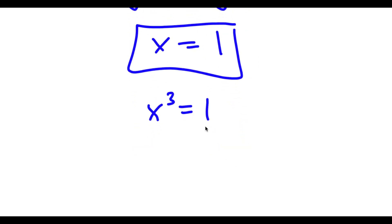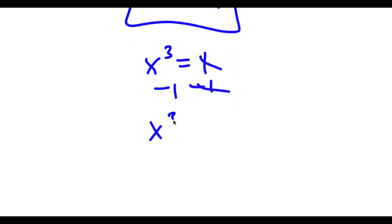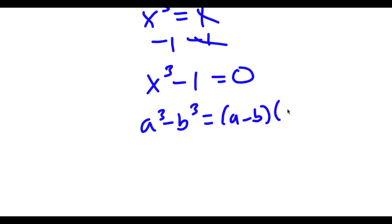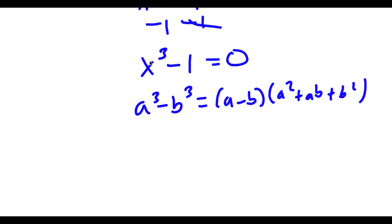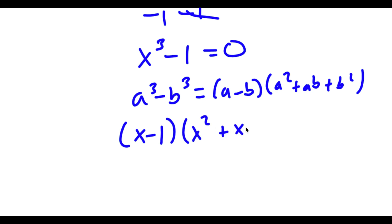Now I'm going to get more solutions. This time I'm actually going to subtract 1 on both sides, so I get x to the power of 3 minus 1 is equal to 0. Using the difference of cubes formula — a to the power of 3 minus b to the power of 3 equals a minus b times a squared plus ab plus b squared — this equals x minus 1 times x squared plus x plus 1, which equals 0.